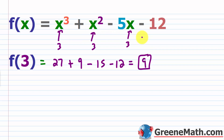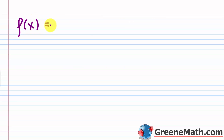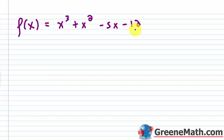But there's another way that you can do this, and it comes from the remainder theorem. So we have f of x equal to x cubed plus x squared minus 5x minus 12. With synthetic division, which we talked about earlier in the course, you can take a polynomial like this and divide it by a polynomial of the form x minus k, where the coefficient of x is 1 and it's raised to the first power.